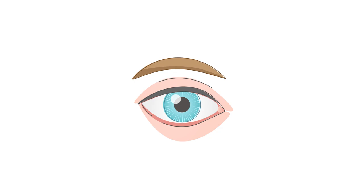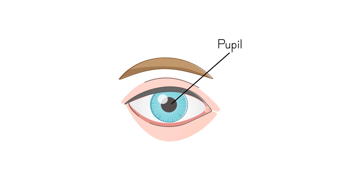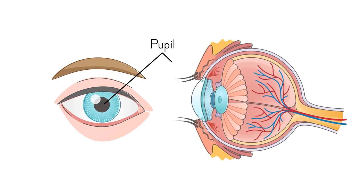In the very center of the front of the eye is a black circular area called the pupil. The pupil is actually an opening that allows light to pass straight through to the back of the eye. Around the pupil is a colored area, the iris.